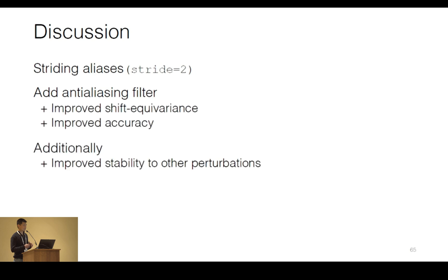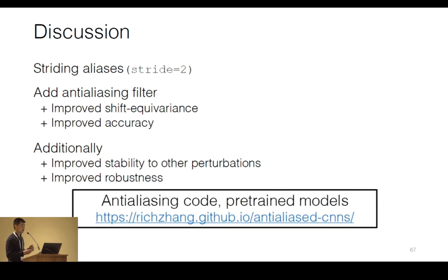Additionally, we've also seen that it improves stability to other perturbations, such as rotations and scaling, as well as improve robustness to corruptions such as noise. So if you're fine-tuning from a pre-trained ImageNet model, for example ResNet 50, I would ask you to consider going to our website and using our anti-aliased version as well. And if you have this snippet of code, stride equals 2, in your network anywhere, perhaps you can benefit also from adding some anti-aliasing.